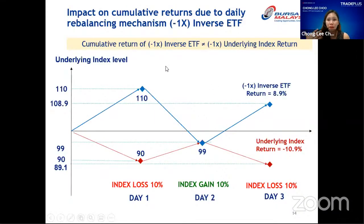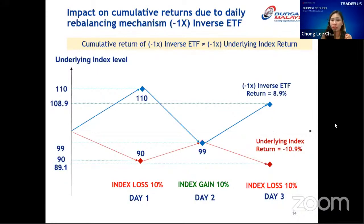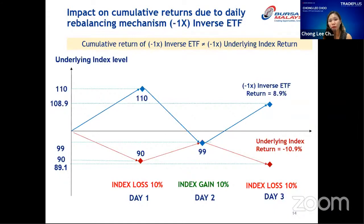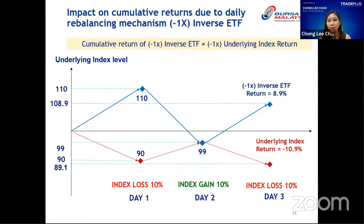Because of the compounding effect of daily rebalancing, if the underlying index is down 10.9% over three days, your inverse ETF return will not give you exactly 10.9% over those three days — it gives you 8.9%. These returns are eroded because of the compounding effect.